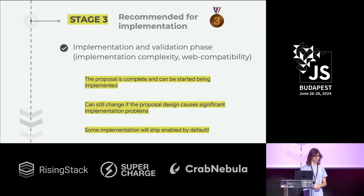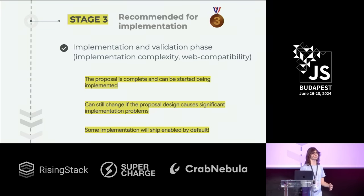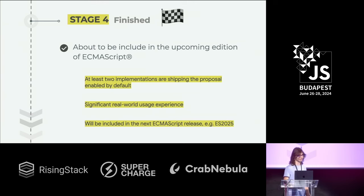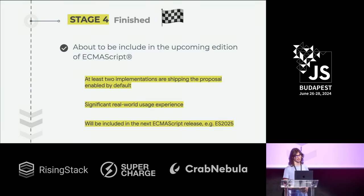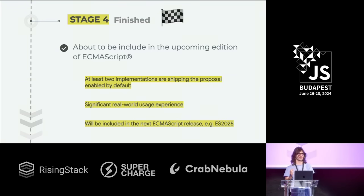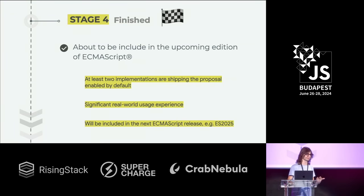During Stage 3, browsers implement the proposal and will ship it by default in the stable version. Once that's done, the proposal is considered finished — it's promoted to Stage 4 and included in the next edition of ECMAScript. When a proposal is Stage 4, even if it's not published in the spec yet technically, you can consider it stable and already use it day-to-day — unless you need your code to work in old browsers and you're not using Babel.